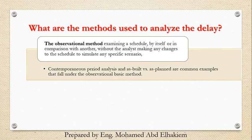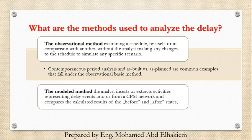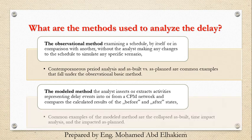Contemporaneous period analysis and as-built versus as-planned are common examples that fall under the observational basic method. The modeled method: the analyst inserts or extracts activities representing delay events into or from a CPM network and compares the calculated results of the before and after states. Common examples of the modeled method are the collapse-as-built, time-impact analysis, and the impacted-as-planned.